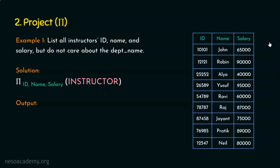Note that the output table will have no table name. We'll cover that when we discuss the last fundamental operation — rename. For now, just understand that the output has certain attributes left out because we are using the project operation.